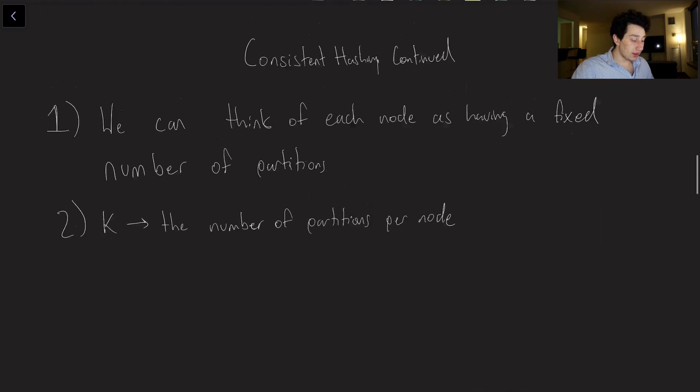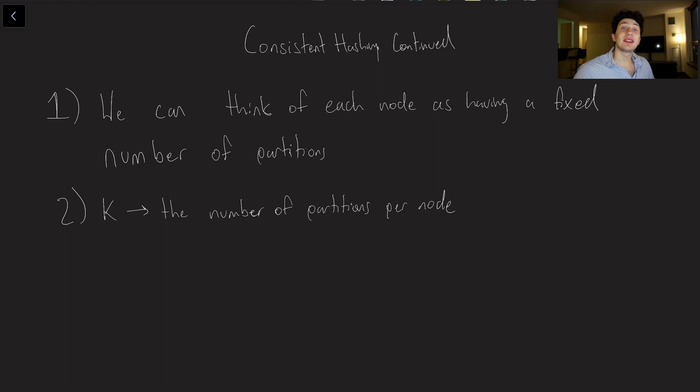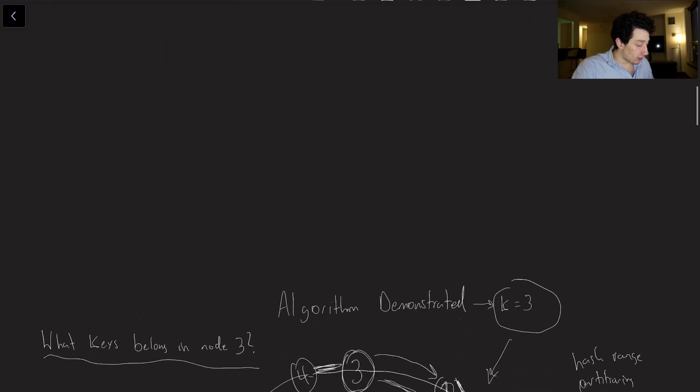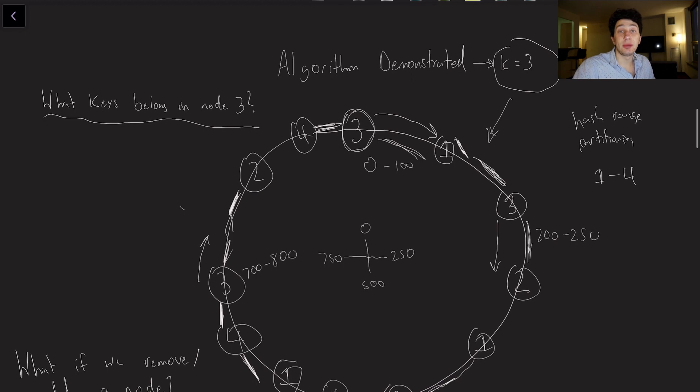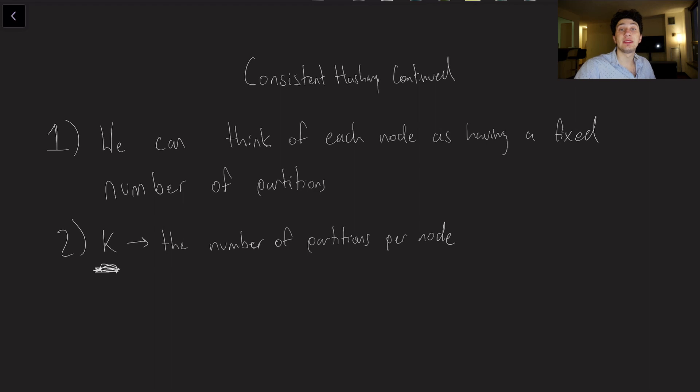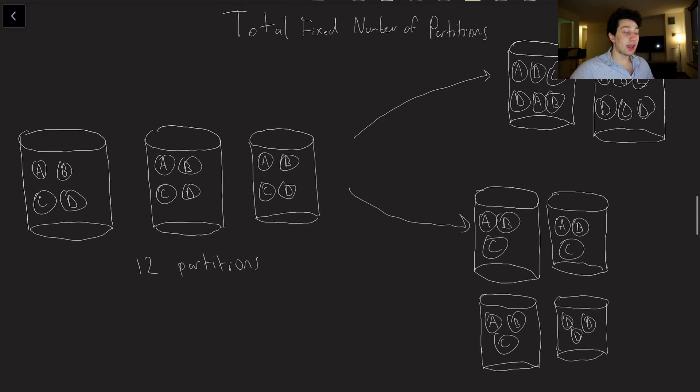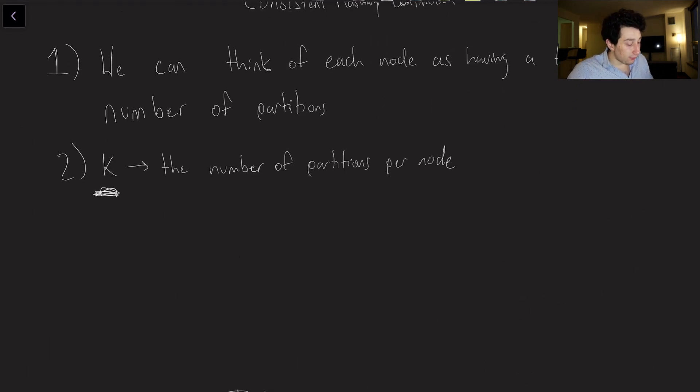So another method, or basically an analysis of consistent hashing, is that the way we can think of each node is actually having a fixed number of partitions. So in this case, the fixed number of partitions was actually going to be that variable k. So we've got k over here, we set it to 3, and k is basically the number of partitions per node. So there are actually some mathematical guarantees about consistent hashing in terms of the distribution of the keys. You're welcome to look them up on Wikipedia. Frankly, I don't think it's really that important for the sake of this video, but it is cool if it's something you're interested in.